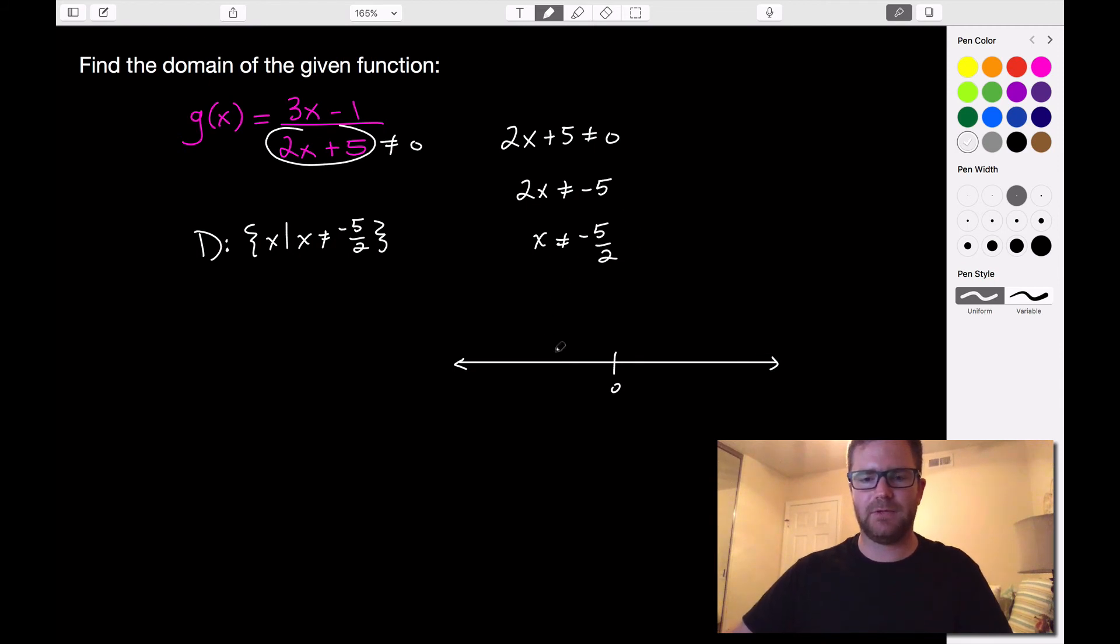So here's zero. Negative 5 halves, that's in between negative 2 and negative 3. So here's negative 1, negative 2, negative 3, so negative 2, negative 3. So it says we're not allowed to equal negative 5 halves. So that means we would have an open circle here at negative 5 halves.